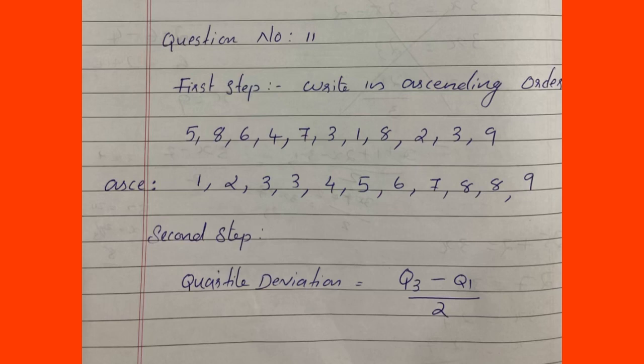The second step is the equation of the quartile deviation. The quartile deviation equation is: Q3 minus Q1 divided by 2. The coefficient of quartile deviation is Q3 minus Q1 divided by Q3 plus Q1.